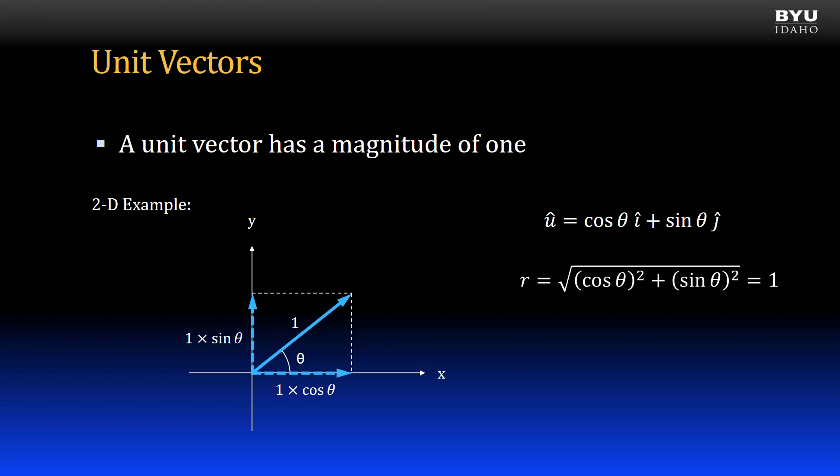We use the Pythagorean theorem to calculate the magnitude based on the components as shown. We know that it must be equal to 1.